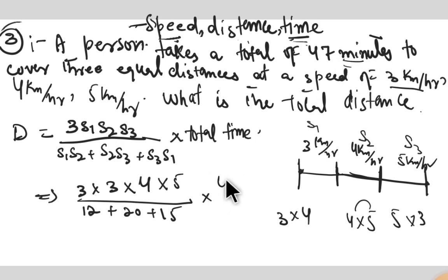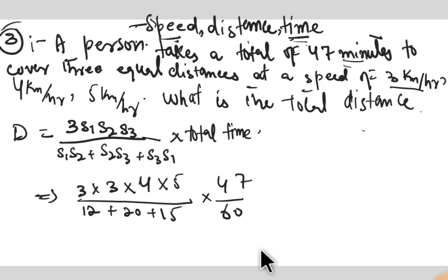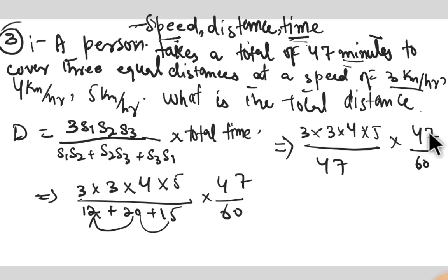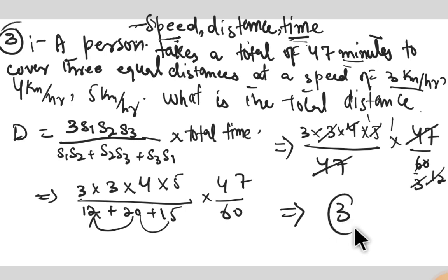Total time needs to be converted to hours: 47 minutes divided by 60. Calculating: 3 into 3 into 4 into 5, divided by 47 divided by 60. After canceling, the total distance in kilometers comes out as the answer.